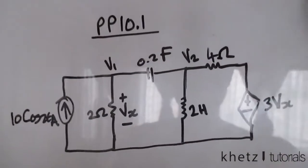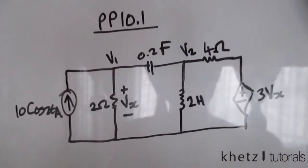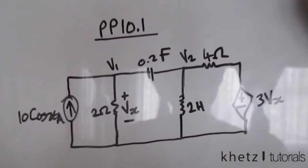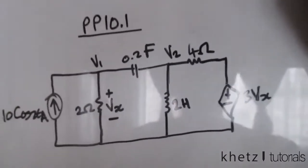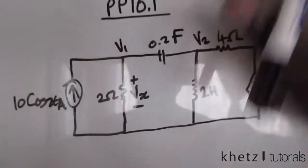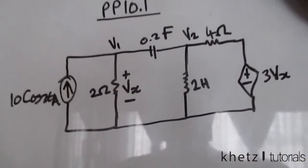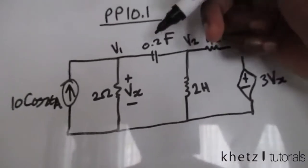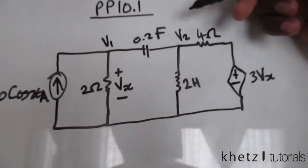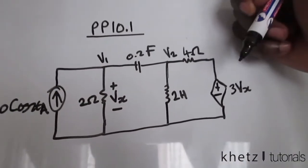Welcome to GAT Tutorials. In this video I'll be covering practice problem 10.1. Given this circuit, we are asked to find V1 and V2 using nodal analysis.